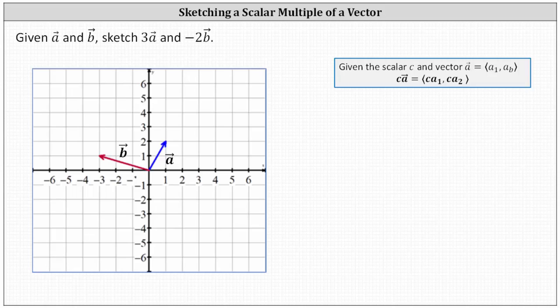To begin, notice the component form of vector a has an x component of one and a y component of two. And the component form of vector b has an x component of negative three and a y component of positive one.